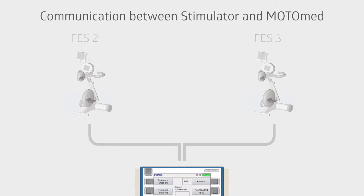There are two ways that the ReaStim2 and the Multimed can communicate. The first is FES2, where the ReaStim2 receives data from the Multimed only.